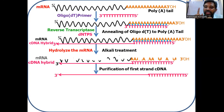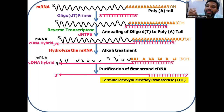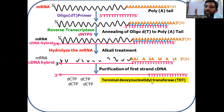To synthesize the second strand, you need a primer. Using terminal deoxynucleotidyl transferase, you can add a specific homopolymer at the 3' end of the cDNA molecule. Here, we add a poly-C polymer at the 3' end of the cDNA molecule by providing only dCTP and terminal deoxynucleotidyl transferase. This enzyme has the ability to add any nucleotide at the 3' end of a DNA molecule substrate — stepwise addition of dNTPs at the 3' end of the DNA molecule.